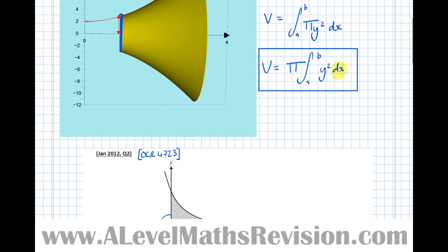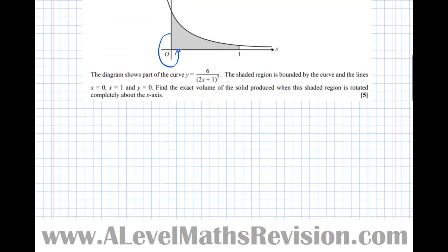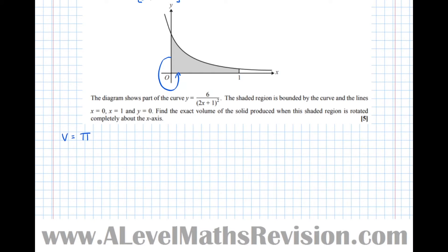So difficult to visualize, but hopefully the animation I showed you before will help you visualize that better. So now, remember the formula. Volume equals pi times the integral between b and a of y squared dx. So let's write that down. Volume equals pi times the integral, and our limits are 1 and 0, of y squared dx equals pi times the integral between 1 and 0. And we can do better than just writing y squared now because we know y is equal to this. So if we square that, we end up with 36 over, and square the bottom, 2x plus 1 to the power of 4 dx.